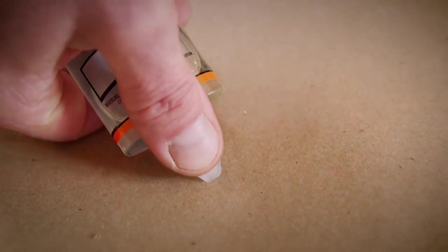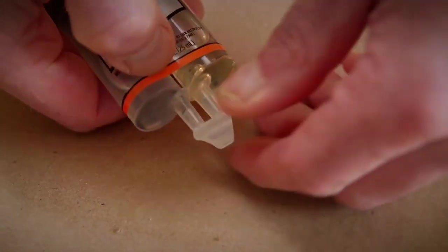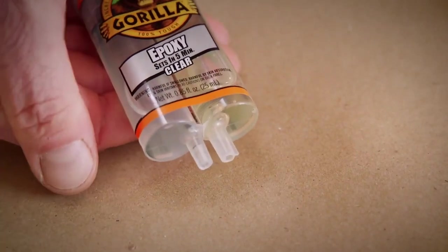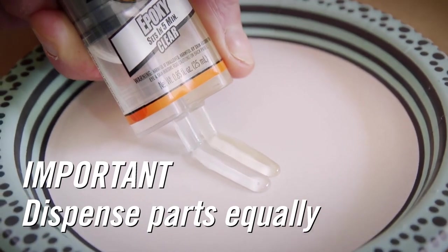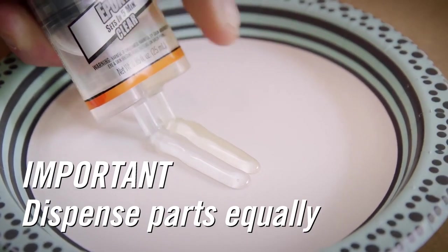Once you have a tray ready, dispense the resin and hardener in equal parts. For the syringe, you will just need to remove the black cap and push down on the dispenser firmly, and the epoxy will dispense in equal parts.